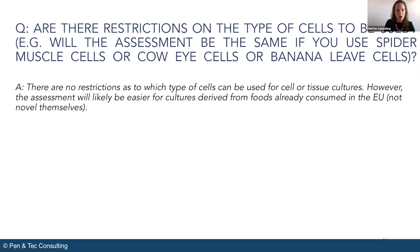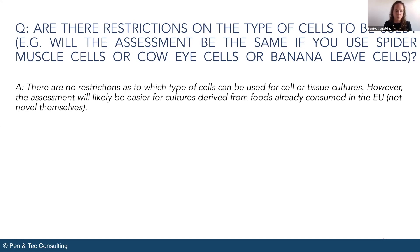Are there restrictions on the type of cells to be used? For example, will the assessment be the same if you use spider muscle cells, cow eye cells, or banana leaf cells? In theory there are no restrictions on the type of cell that you use, but I do believe that a successful application might be easier for cell cultures derived from foods that are already consumed in the EU — for example, lab-grown beef or lab-grown chicken.